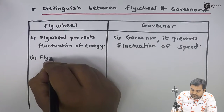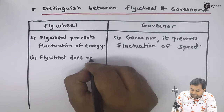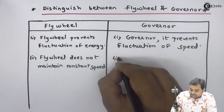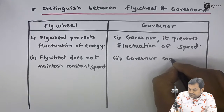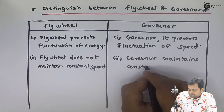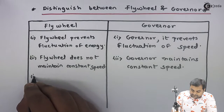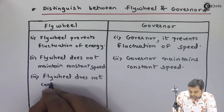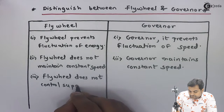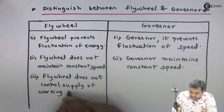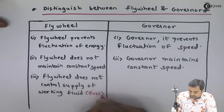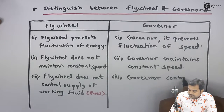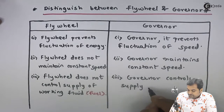Next, flywheel does not maintain constant speed, whereas governor maintains constant speed. Next, flywheel does not control supply of working fluid, that is fuel, whereas governor controls supply of working fluid.